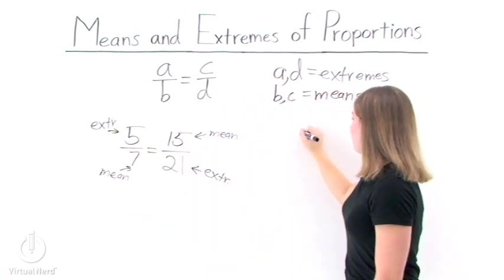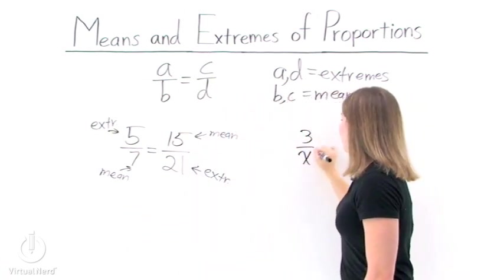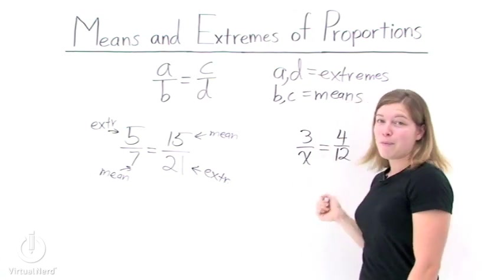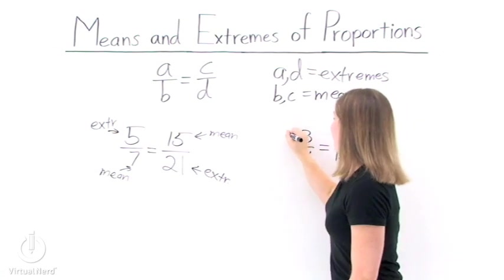Let's do one more example, one with a variable in it. 3 over x equals 4 over 12. Pick out the means and extremes.